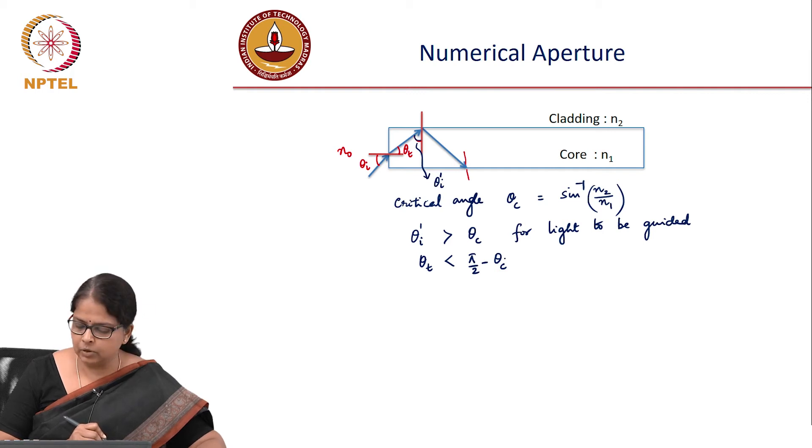θᵢ is the largest angle you should have. Let's calculate the critical angle. For instance, if the core is 1.5 and the cladding is air, what would sin⁻¹(n₂/n₁) be? Let's calculate θc.